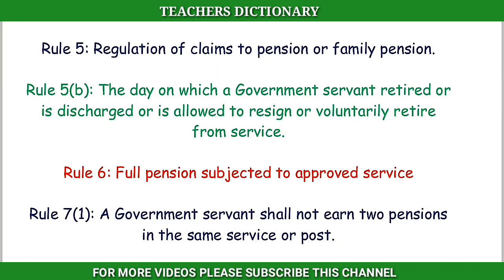Rule 5: Regulation of Claims to Pension or Family Pension. Rule 5(b): The day on which a government servant retired, or is discharged, or is allowed to resign, or voluntarily retire from service.